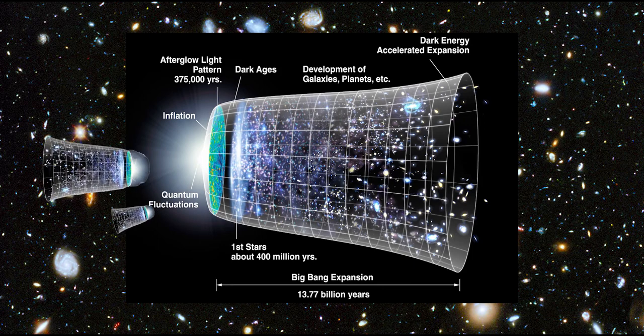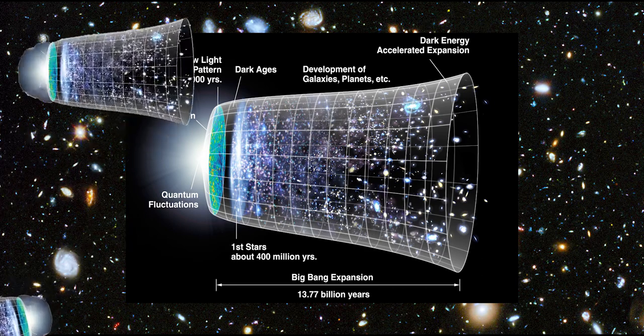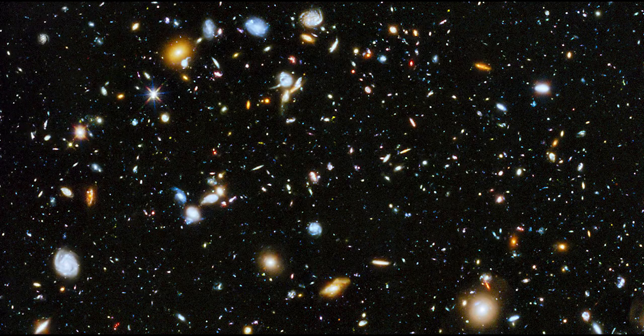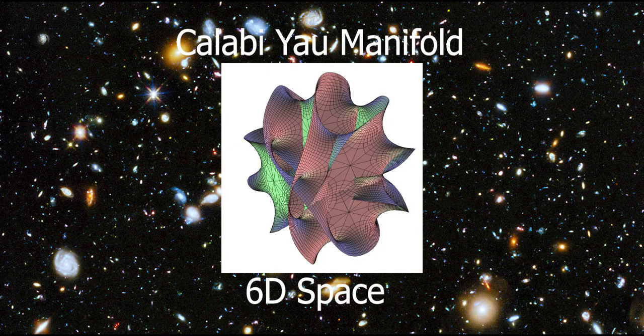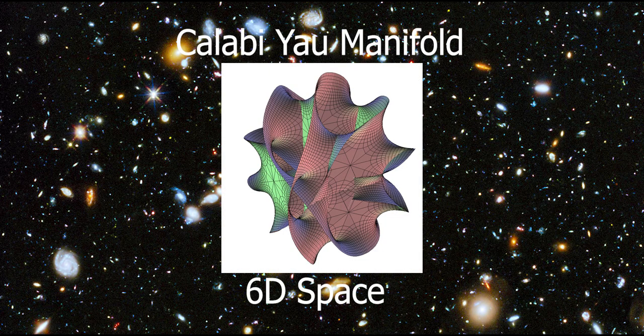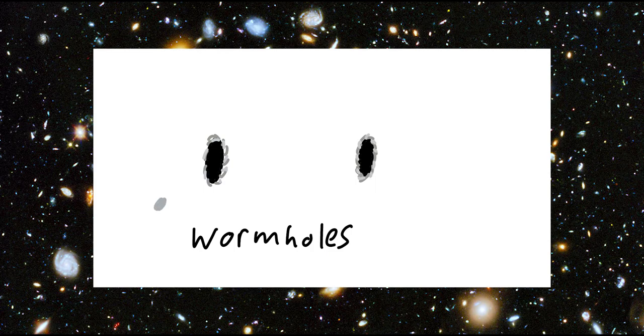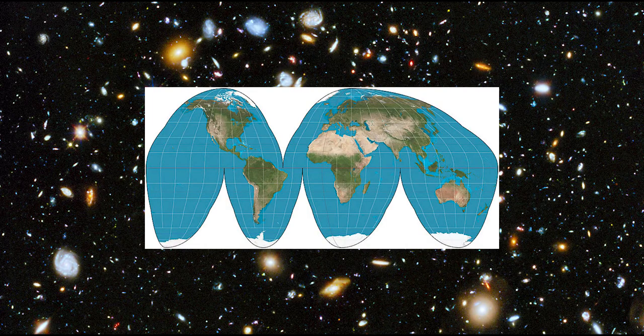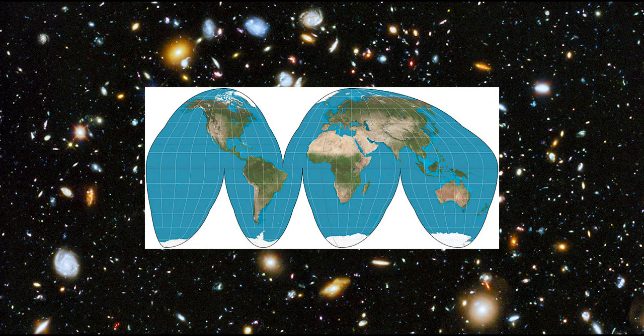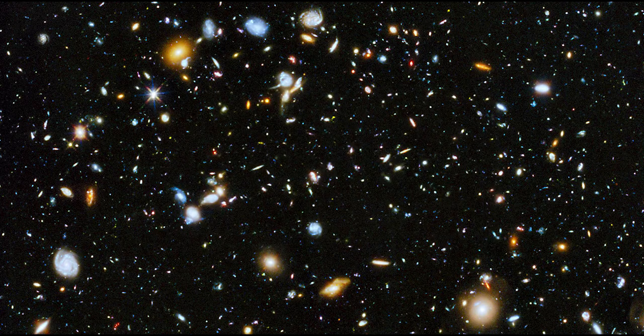Some theories say the Big Bang made a bunch of universes and they're all flying out away from each other. Some theories say that there are multiple Big Bangs. Some theories demonstrate how there are more spatial dimensions beyond the X, Y and Z axes, and our 3D universe resides in the medium of these higher dimensions, like how the two-dimensional surface of a ball exists in a 3D realm.